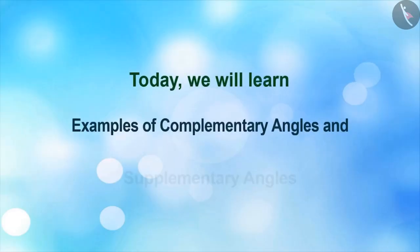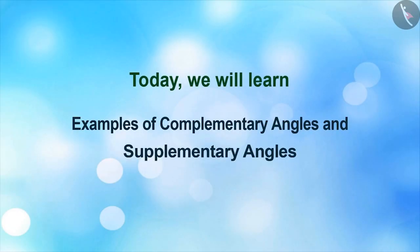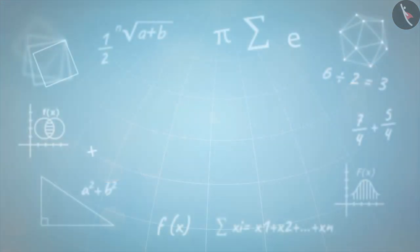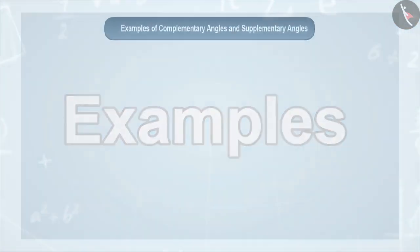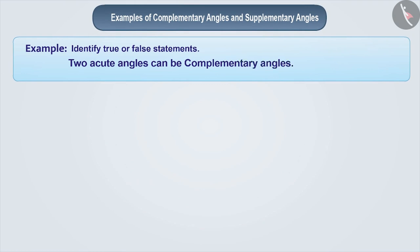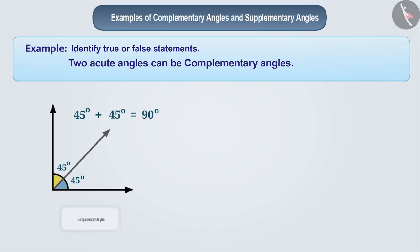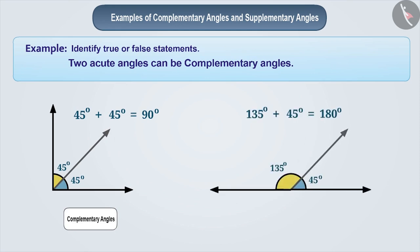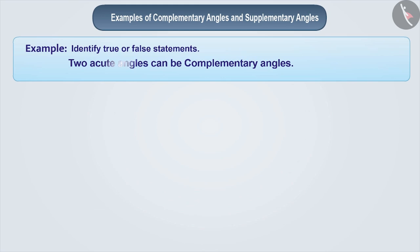Today, we will see examples of complementary angles and supplementary angles. We need to identify the correct and incorrect statements. In the previous video, we learnt that if the sum of any two angles is 90 degrees, then they are called complementary angles of each other. And if the sum of any two angles is 180 degrees, then they are called supplementary angles. On the basis of this, let's find out whether each given statement is correct or incorrect.